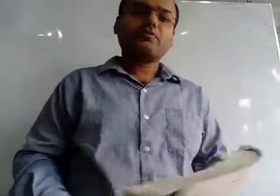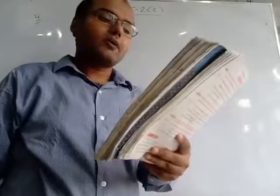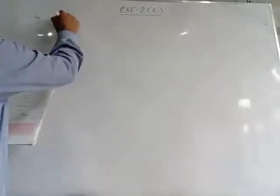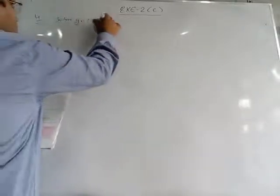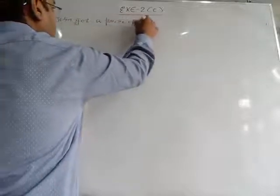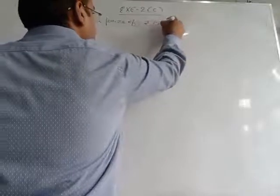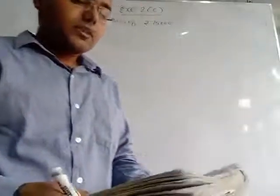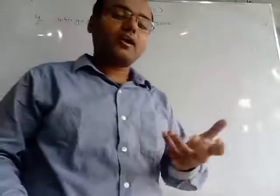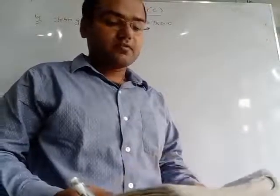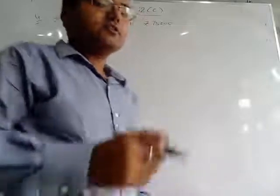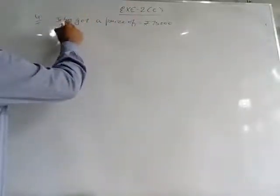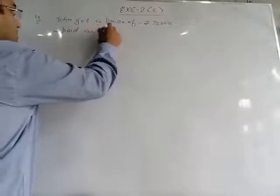Now see question number 4. John got a prize of Rs. 75,000 in a TV contest. We write this down first. He paid 1/10 of the price as income tax, so first we calculate the money paid as income tax.